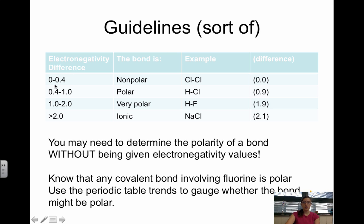So here are sort of guidelines with looking at types of bonds. So 0 to 0.4 is nonpolar. What you could say here is 0.41 to 1.0 is polar. 1 to 2 is very polar. And then anything greater than 2 is ionic.